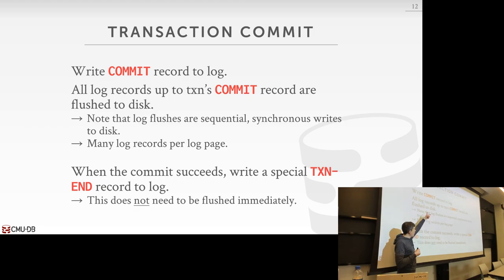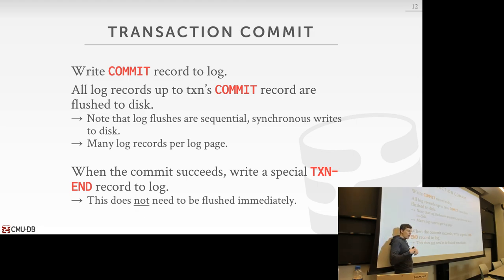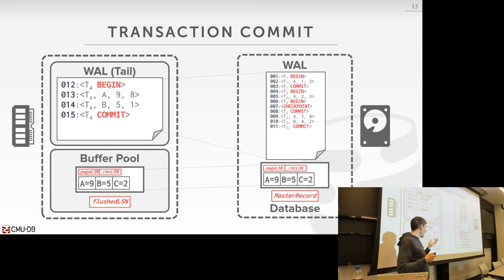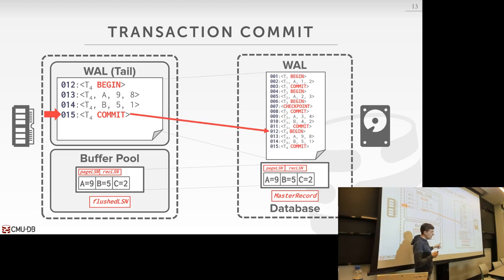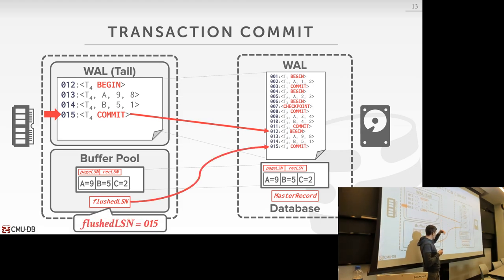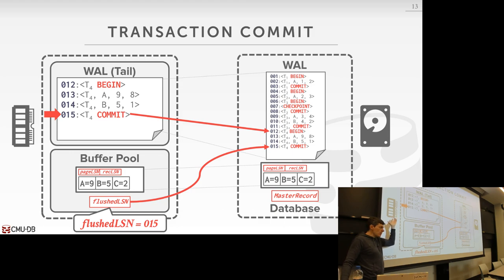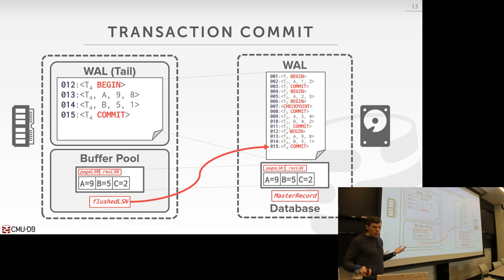The transaction end is just telling the database system in the log that we will never see anything else about this transaction ever again once we see this transaction end, and therefore we can remove it from all of our internal bookkeeping tables. Unlike commit where we have to flush that to disk before we tell the outside world we've committed, we don't need to do a hard flush on the transaction end — we just append it to our log buffer and it gets written out as part of the normal process.